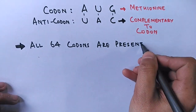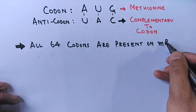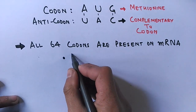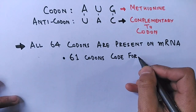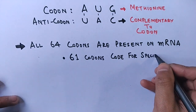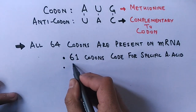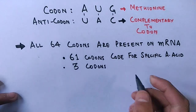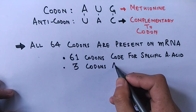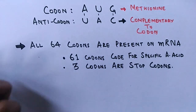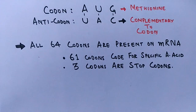All 64 codons that have been discovered are present on the mRNA chain. Of these 64 codons, 61 codons code for specific amino acids, while the remaining three are stop codons. Stop codons do not code for any amino acid; they serve as stop signals indicating where the amino acid chain synthesis is to be terminated.